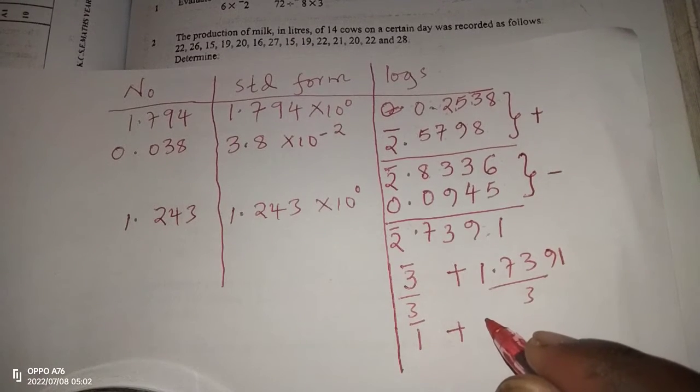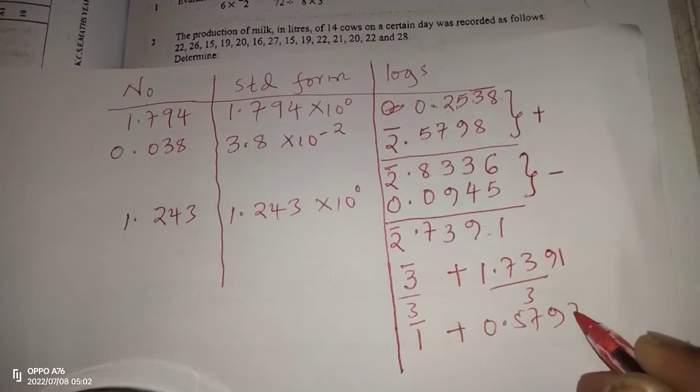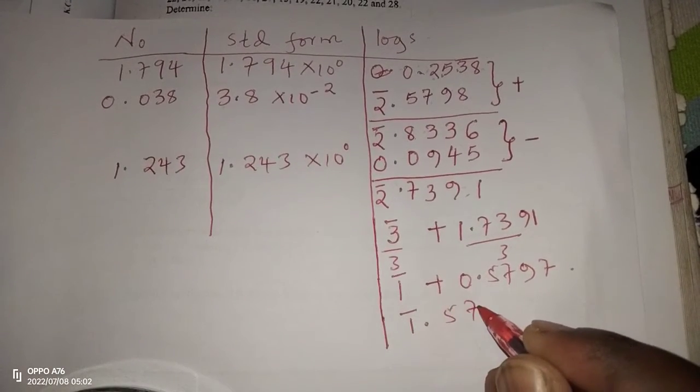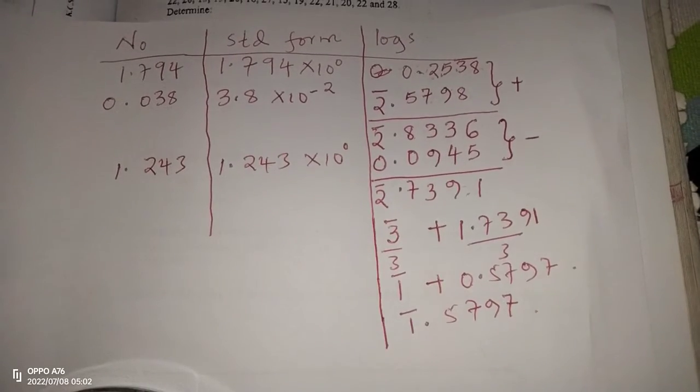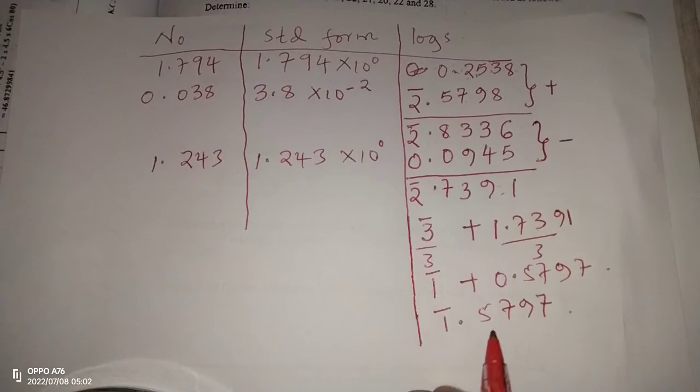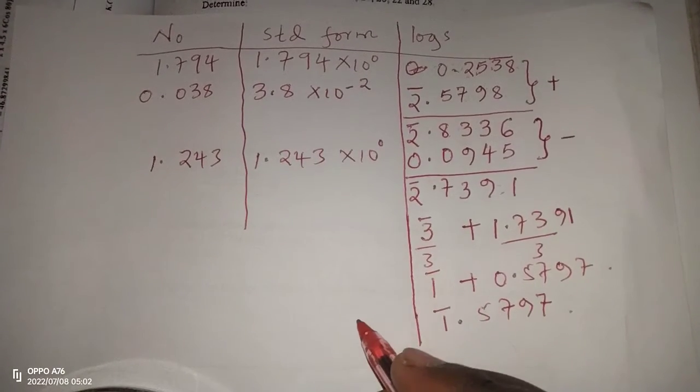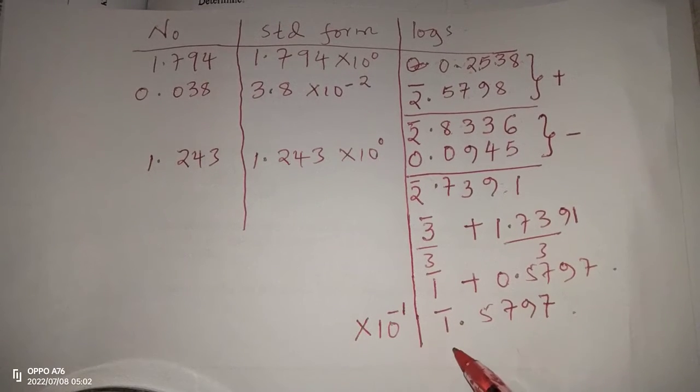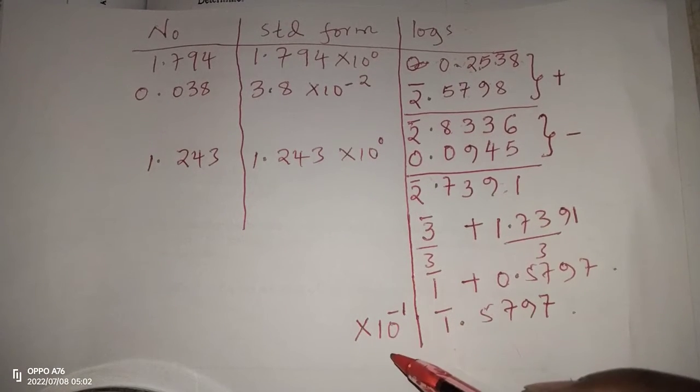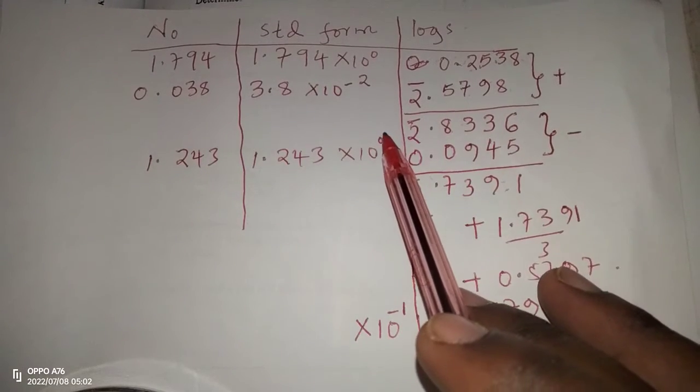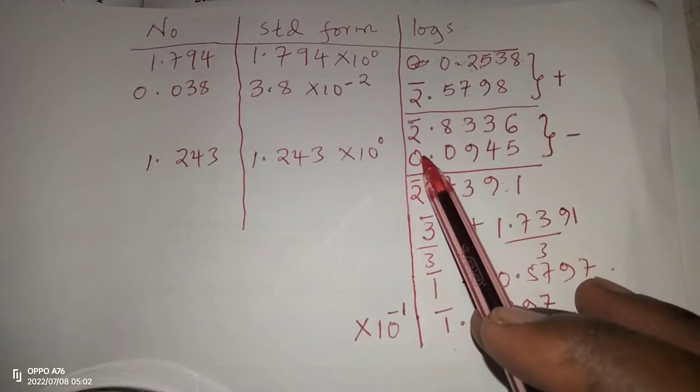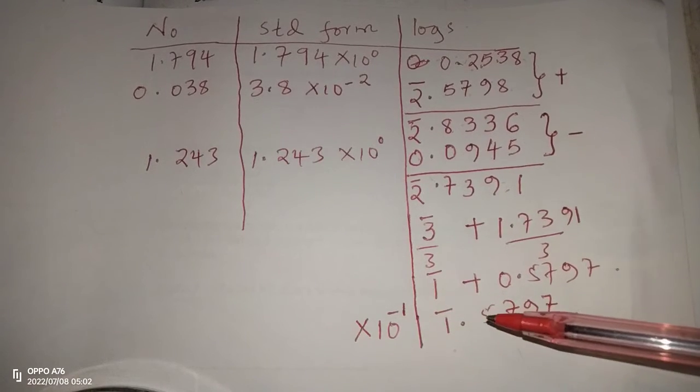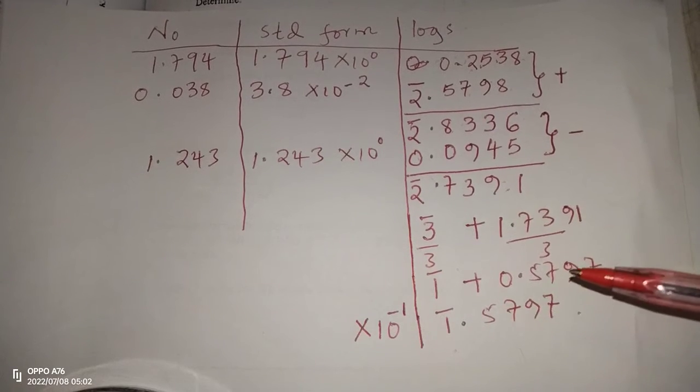Then after this, we can now get the number whose logarithm is this, which means the first step will get to the standard form part, whereby it will be 10 power negative 1. Since we have bar 1 here on the characteristic part, which represents the power we have here. Just the way we were reading, after getting the power, we get the logarithm by starting with the power here as the characteristic. We are now going backwards. We have the characteristic already, so it gives us the power we have here. Then we are remaining with now a log of 0.5797.